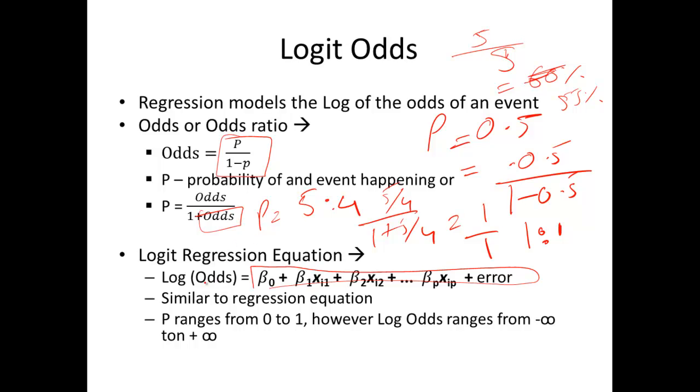In logistic regression equation, the dependent variable that we're trying to model is the log of the odds. This is an equation that you've seen before - this is the regression equation itself which is beta naught plus beta 1 x1 plus beta 2 x2 and so on, where beta naught is the intercept, beta 1 till beta n are all the estimates against the variable, and x1, x2, x3 can be your independent variables. This is similar to a regression equation.